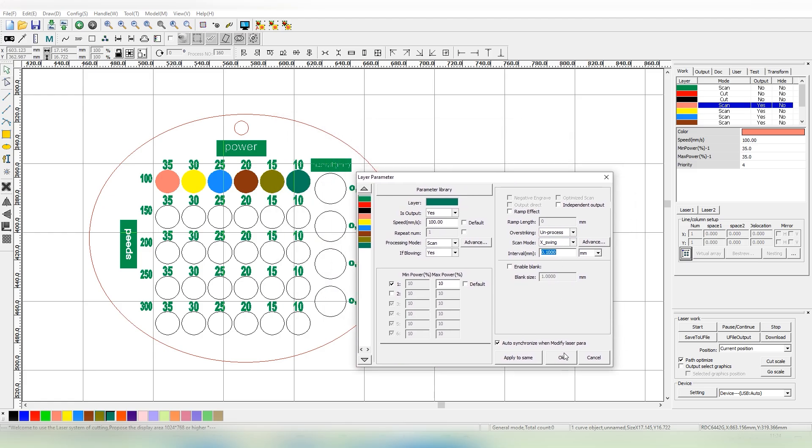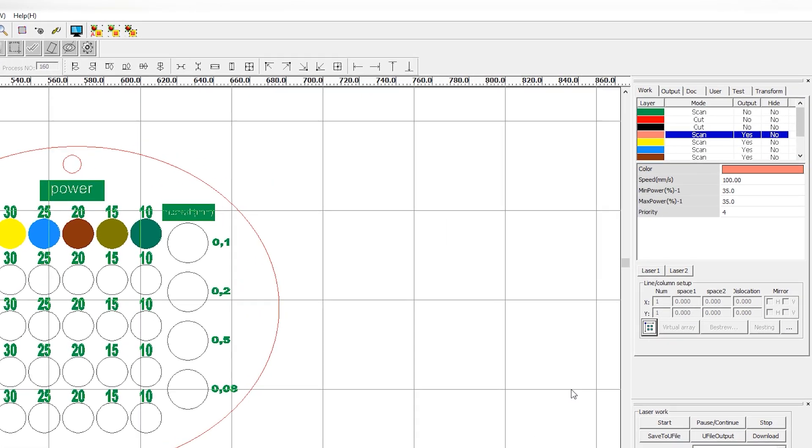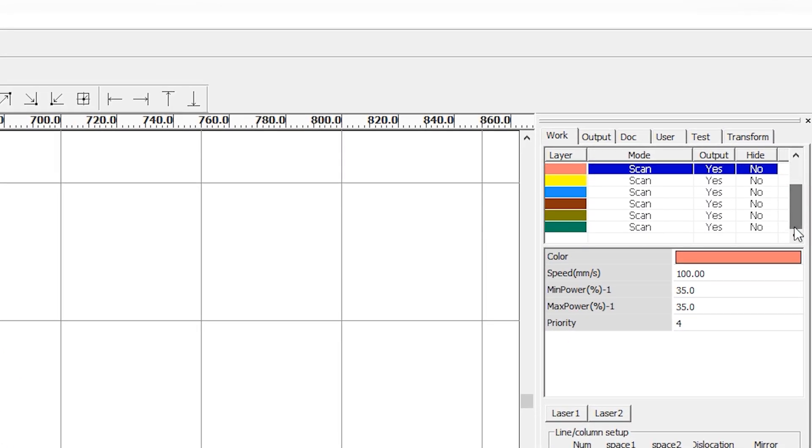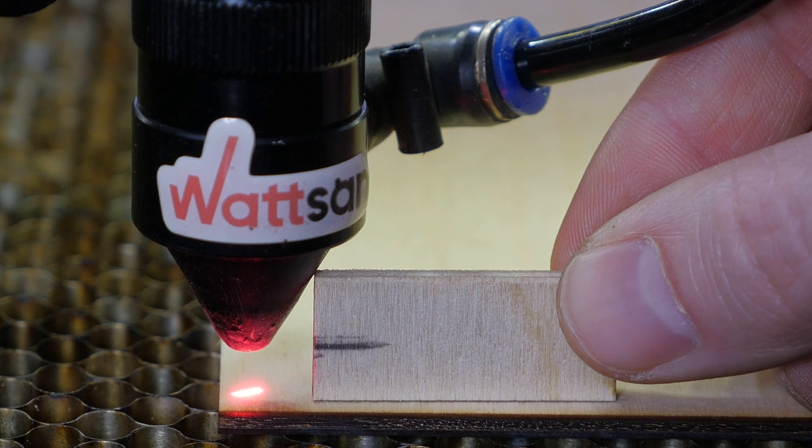When moving to the next row, we only need to assign a color to the figures, keeping the same power setting. We change the speed parameters according to the squares row. Set the focal length and the Z minimum. Going to the next step is to press start and watch the engraving process.